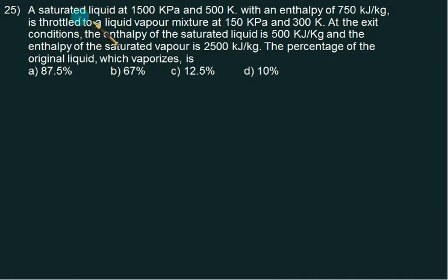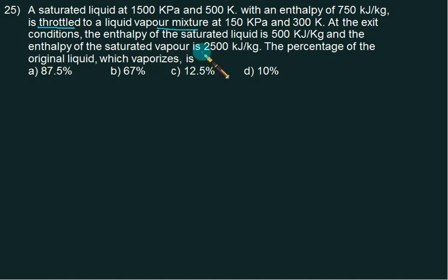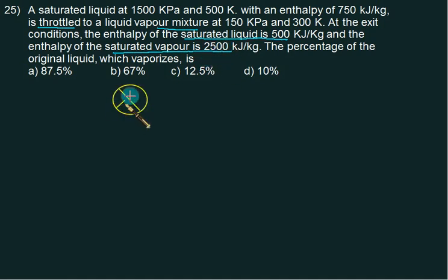A saturated liquid at 1500 kilopascal and 500 Kelvin with an enthalpy of 750 undergoes throttling — enthalpy remains constant — to a liquid-vapor mixture at 150 kilopascal and 300 Kelvin, where pressure and temperature both drop. At the exit condition, the enthalpy of saturated liquid HF is 500 and enthalpy of saturated vapor HG is 2500. We need to find the dryness fraction — the percentage of the original liquid which vaporizes.